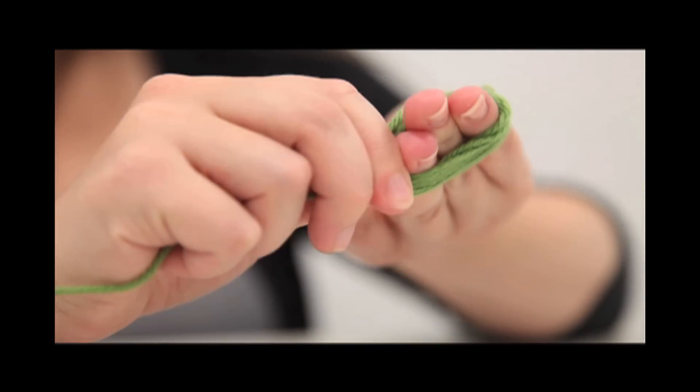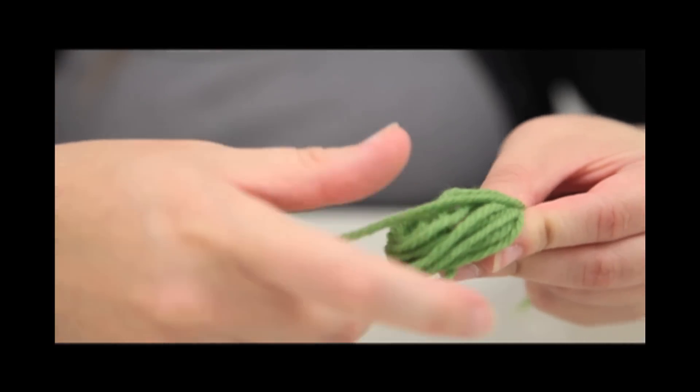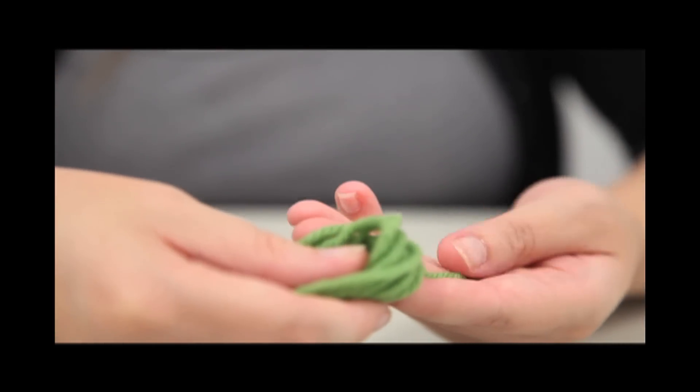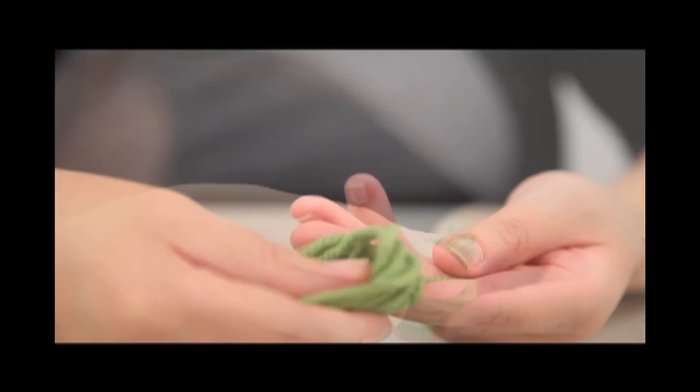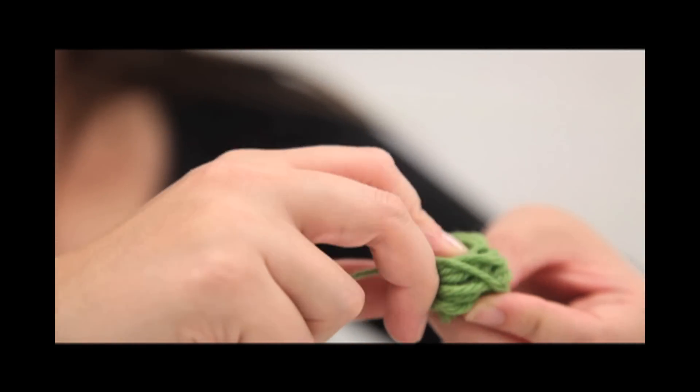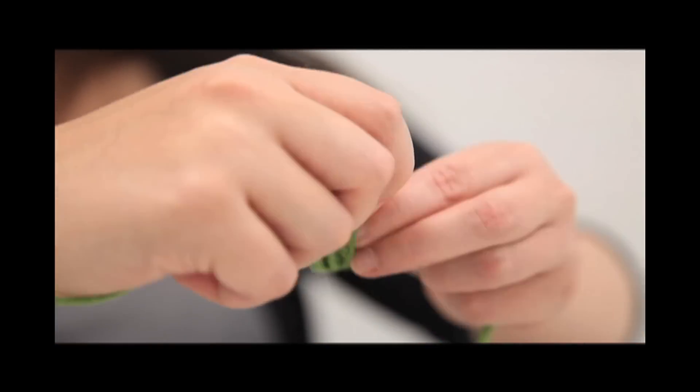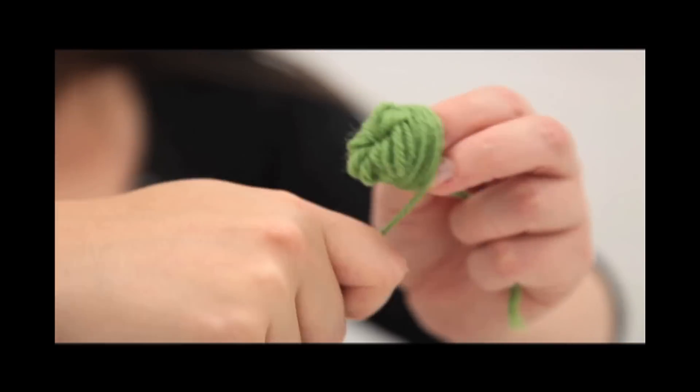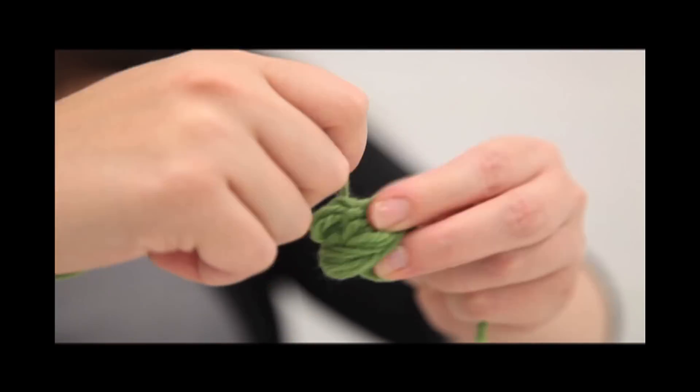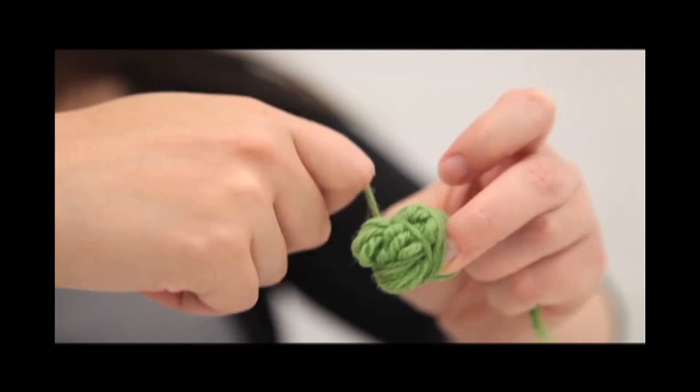Then you're going to take the yarn off those fingers and cinch them right down the middle, still securing that center strand there. Now you're going to fold these two in half and wind the yarn around to neaten up this little mass that's the base of your ball.